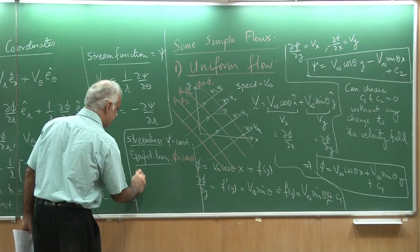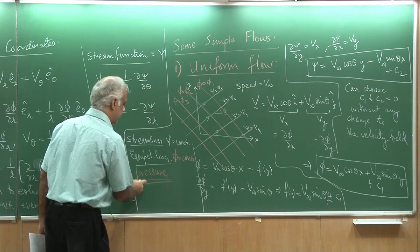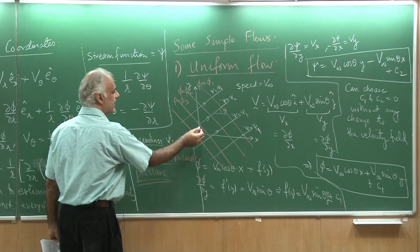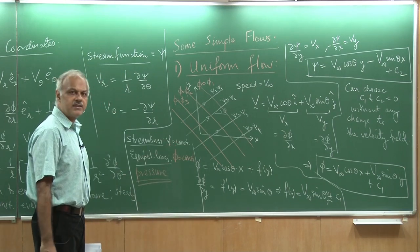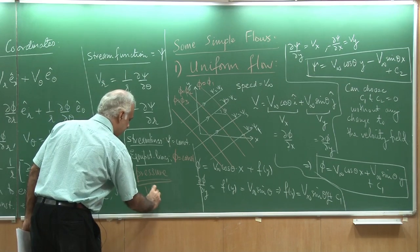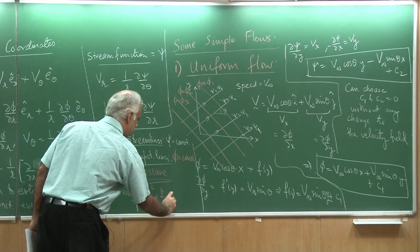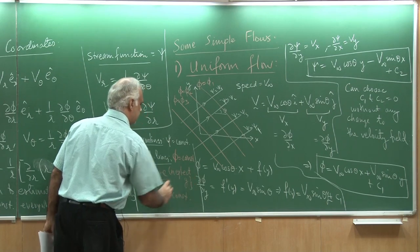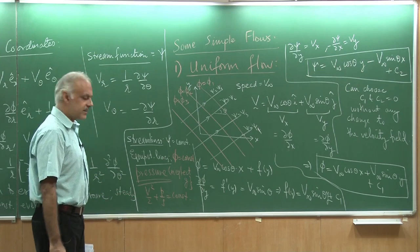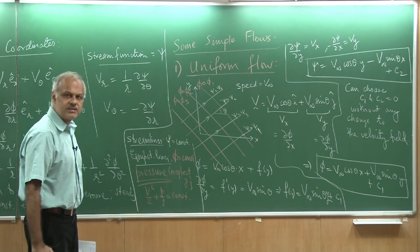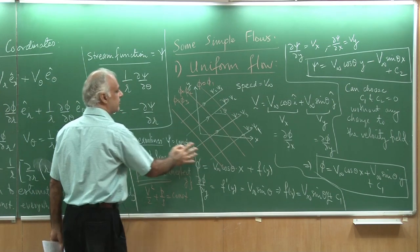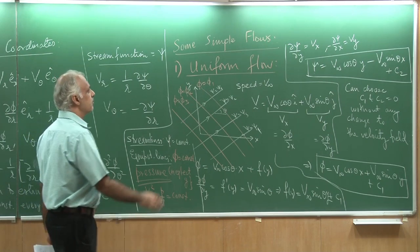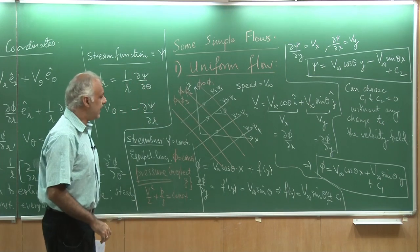What about the pressure? If gravity is not important - suppose gravity acts normal to the x-y plane - then Bernoulli's equation tells me that v-squared over 2 plus p over rho is constant if I neglect gravity. Because v-squared is constant everywhere in a uniform flow, the pressure is also constant everywhere. So I get constant atmospheric pressure everywhere in the uniform flow with no variation. This is the most basic potential flow: a uniform flow at an angle to the axis.